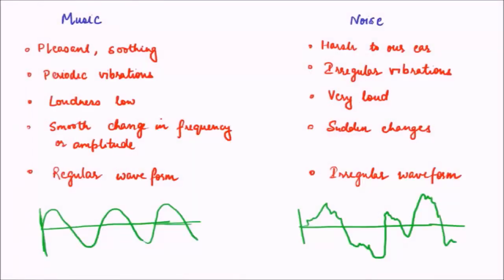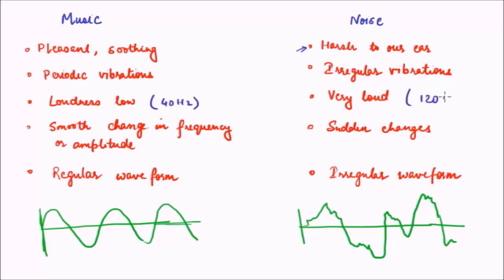Now let's discuss how music is different from noise. The first property of music is that it is pleasing and soothing to our ears, whereas noise is quite harsh. Music has periodic vibrations and is normally of low loudness — something like 40 decibels. Whereas noise has irregular vibrations with certain rises and falls, and it is very loud, normally above 120 decibels, which can be quite unpleasant.